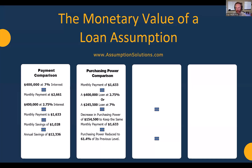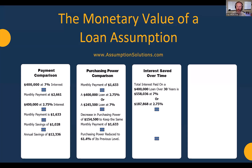Let's look at something not a lot of people think about but is really huge: interest savings over time. Looking at the amortization schedule — total interest paid on a $400,000 loan over 30 years is $558,000 and change at 7%, or $187,868 at 2.75%. The total interest savings over 30 years is over $370,000. That is massive when you talk about wealth building over time — just not having to pay that out to anybody else is a big deal.